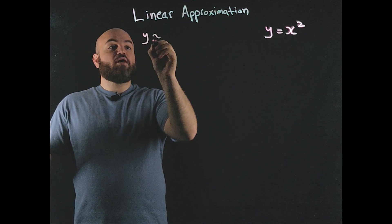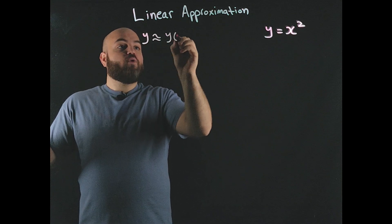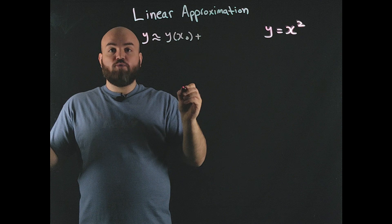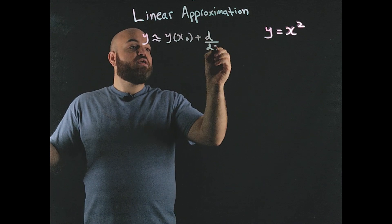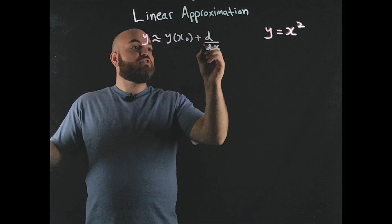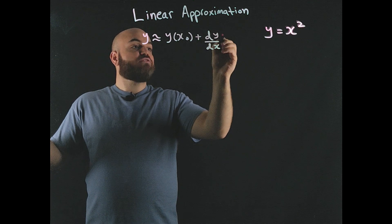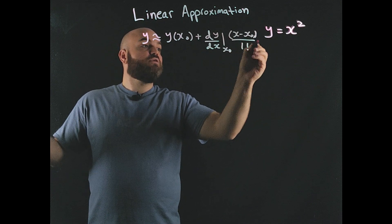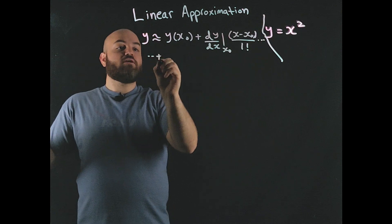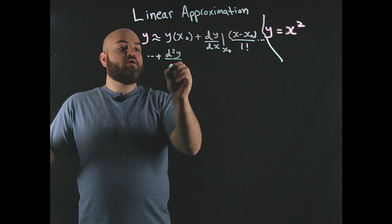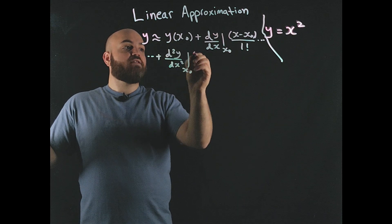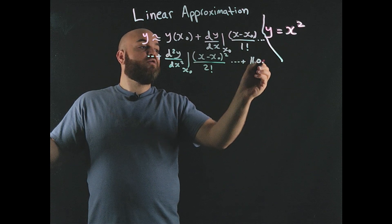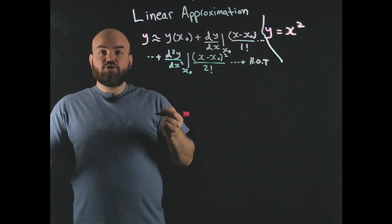The Taylor series says you can approximate a function y the following way: compute y at x0, which is the point at which you want to linearize, then add onto it an infinite number of terms based on the derivatives of that function around that point. The first term is dy/dx evaluated at x0, times (x − x0) divided by 1 factorial. The next term is the second derivative at x0, times (x − x0) squared divided by 2 factorial, and so on with higher order terms.